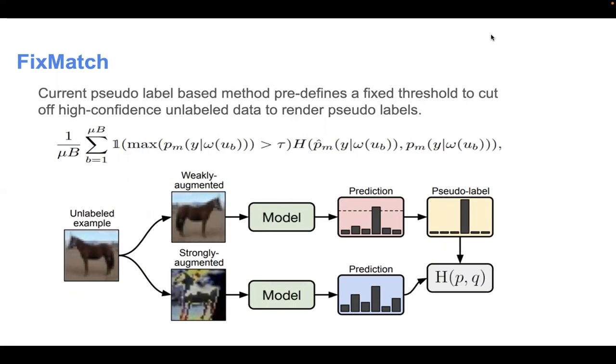FixMatch is a commonly used semi-supervised learning method. It has two models. The teacher model utilizes weakly-augmented image as input to teach the student model, which utilizes the strongly-augmented image as input.